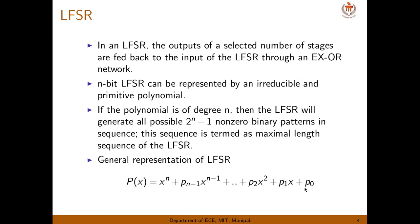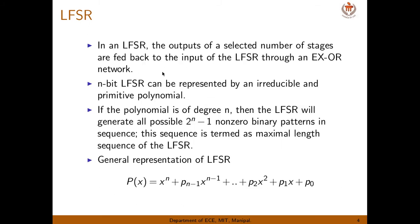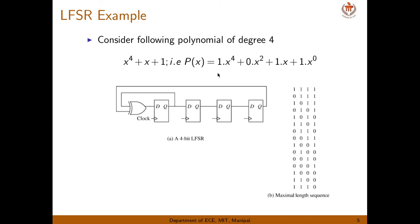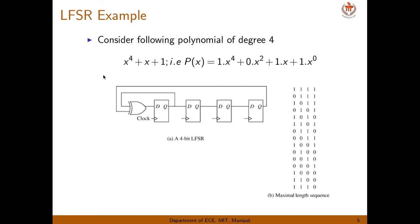Consider an example with polynomial degree 4. Take the polynomial X to the power 4 plus X plus 1. Substituting into the general formula, the coefficient of X⁴ is 1, X³ is not present, X² is not present, the coefficient of X¹ is 1, and the coefficient of X⁰ is 1.